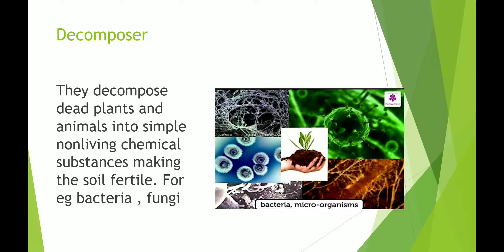Decomposers decompose dead plants and animals into simple non-living chemical substances, making the soil fertile. For example, bacteria and fungi. They decompose the remains of dead plants and animals, convert them into humus, and mix it with the soil to increase its fertility. Producers, consumers, and decomposers are all interrelated — no one can survive without the other.